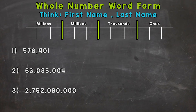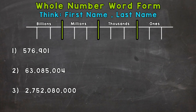On to word form now. When it comes to word form, we're going to write these numbers out in words — hence the name word form. We need to think about how we would say these numbers, and that's exactly what we write. We have three examples to go through together. At the top of the screen I have a very important hint: think first name, last name. I also have a place value chart we're going to use for number one. Your ultimate goal is to be able to do word form without a place value chart. So let's jump into number one and write it in our place value chart to help us see how we say these numbers properly.